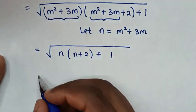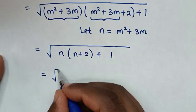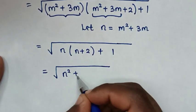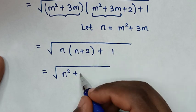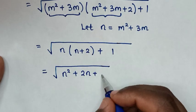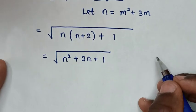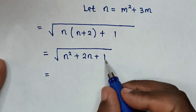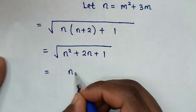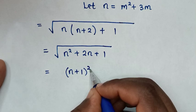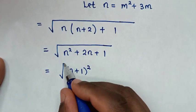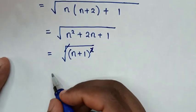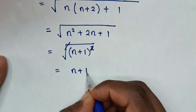In the next step, it will be equal to the square root of n²+2n+1, which is the same as (n+1)². The square root then cancels with the square, giving n+1.